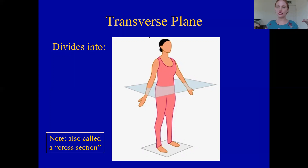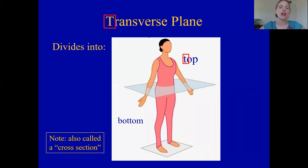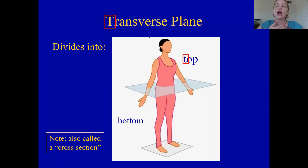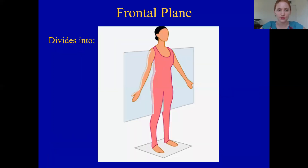The next one is transverse. Transverse means that you cut horizontally. Horizontal cuts are along the transverse plane, and that's going to divide the specimen or the body into a top and a bottom. That's how I remember it — the transverse plane gives you a top and a bottom. By the way, sometimes in histology this is referred to as a cross section, but I'll be using the term transverse section most of the time.